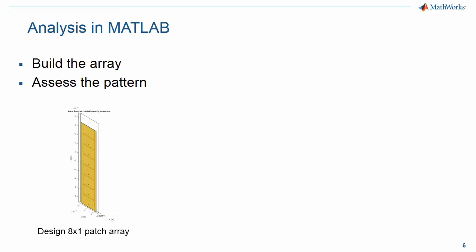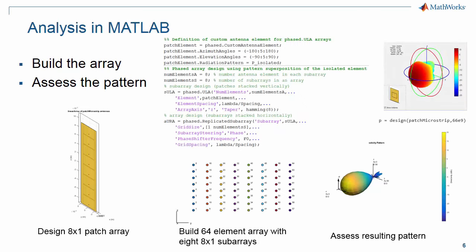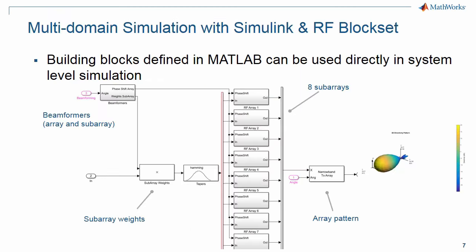In this example, we have an 8 by 1 patch array. We build up a subarray from these patch arrays with 64 total elements. We can see the resulting pattern that is produced. We can build this up in MATLAB and we can use an antenna that we designed in our antenna toolbox. We make that element be the one that's used throughout the array to have a higher fidelity model. While the antenna design and the array design can be done in MATLAB, simulating hybrid beamforming requires the ability to model analog and RF effects as well.